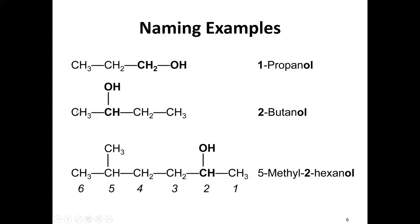Here our longest chain is four carbons — one, two, three, four — making this 2-butanol. In another example, we count our longest chain: one, two, three, four, five, six. Six is our longest chain, and numbering from the end closest to the functional group, noting the name and position of substituents, this becomes 5-methyl-2-hexanol.